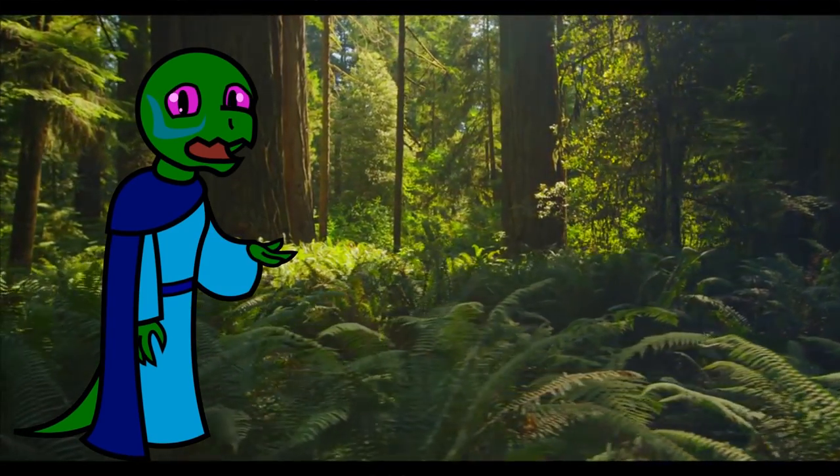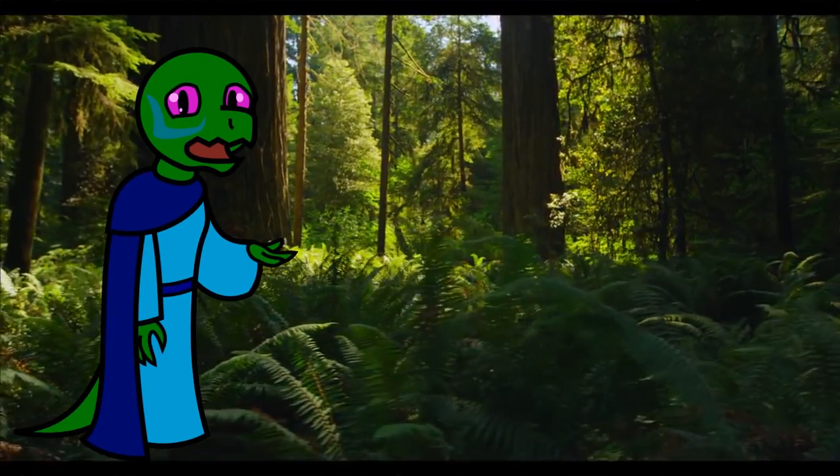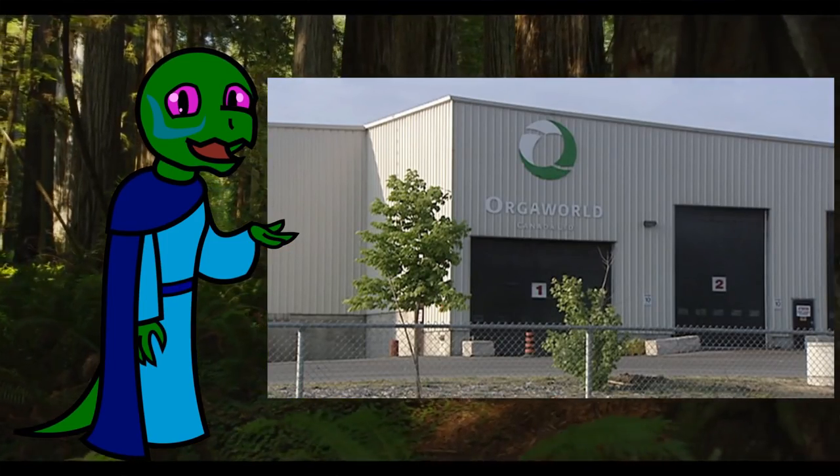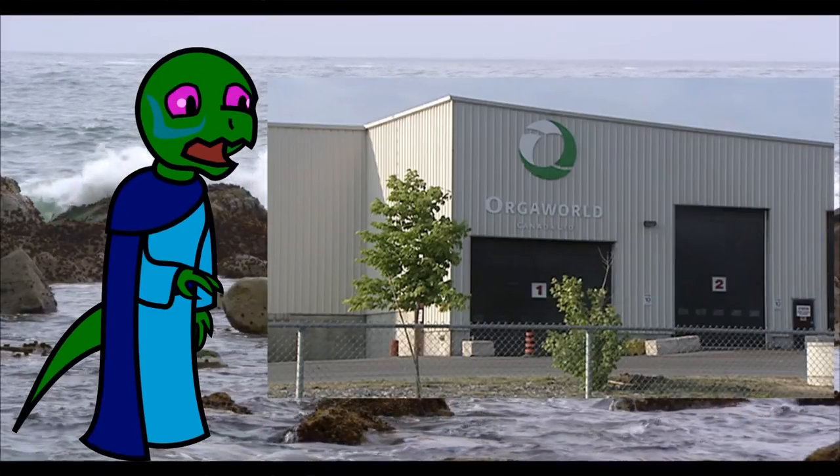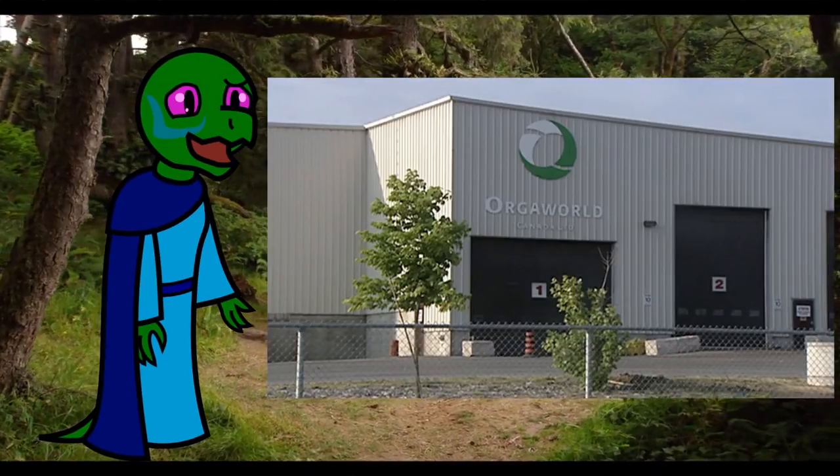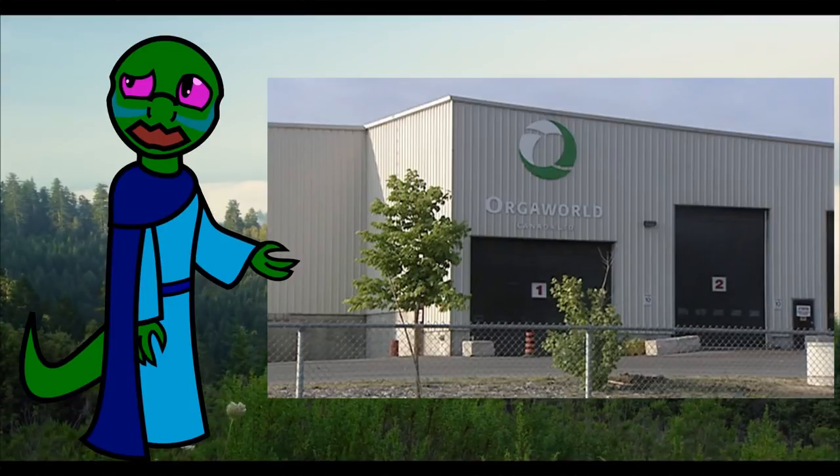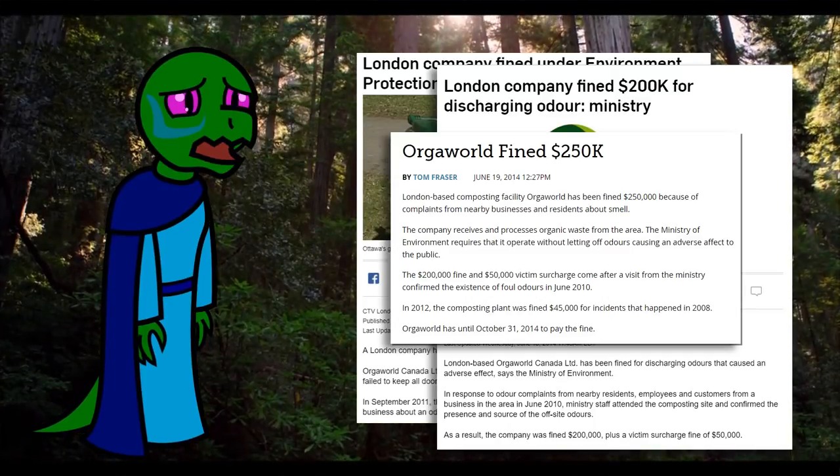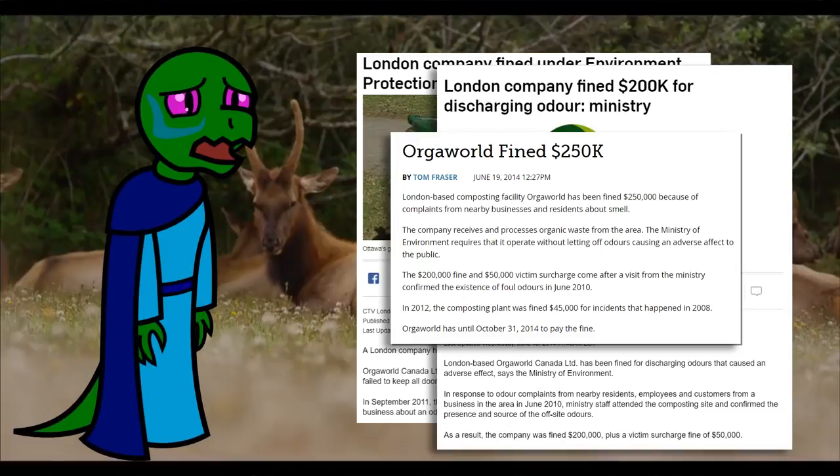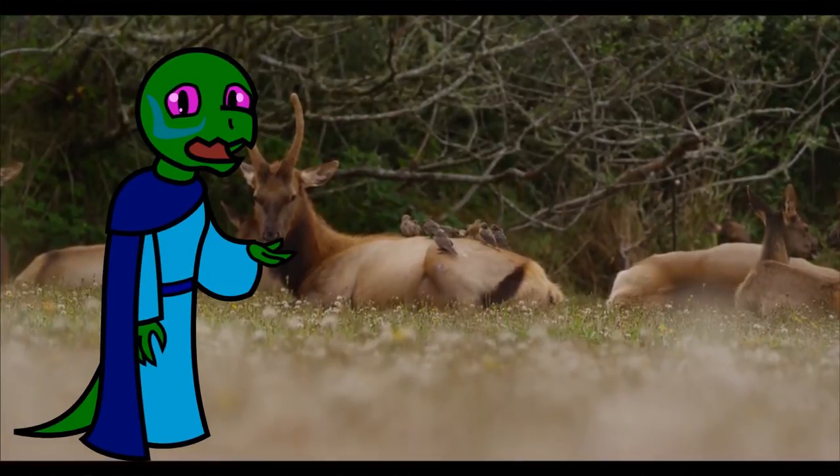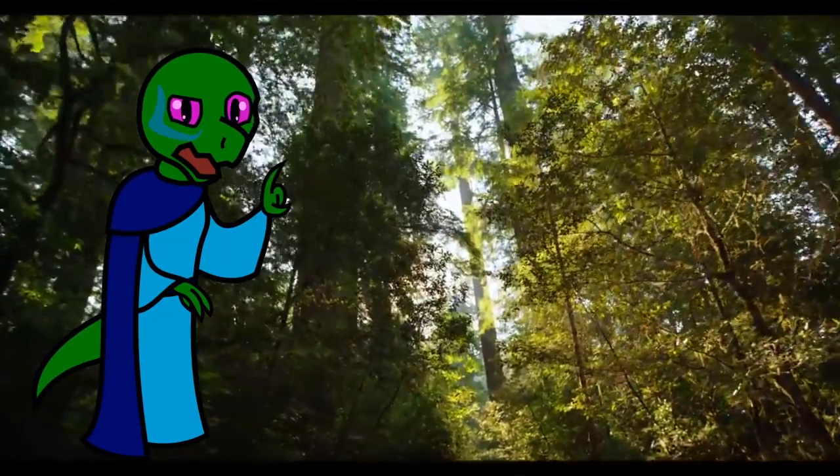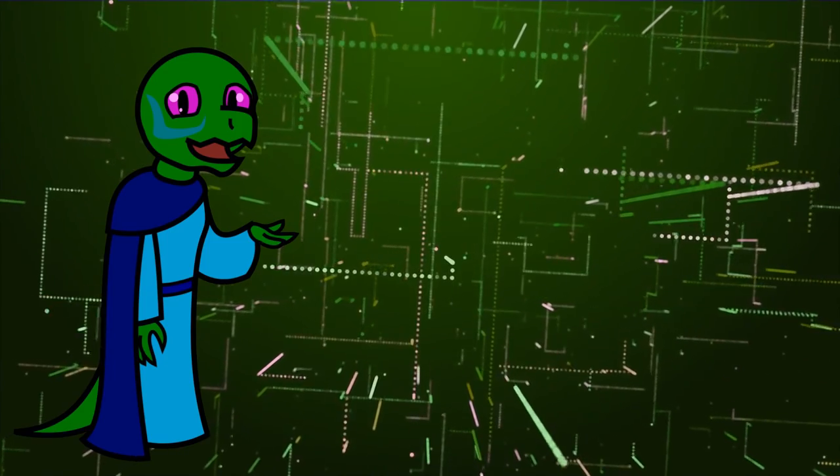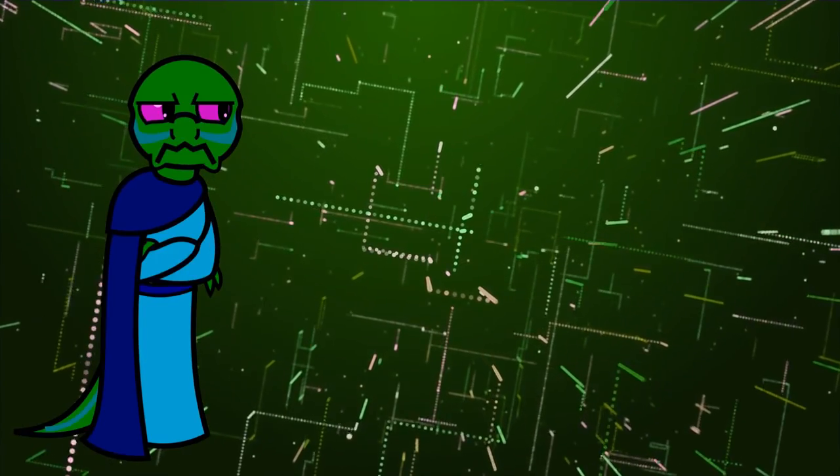Especially since more often than not, legislation is written by special interests on the business's behalf. The result is situations like in London, Ontario. The Orgaworld Waste Treatment Plant releases an atrocious odor, which has been an ongoing problem in the area since 2007. Not because the government hasn't tried to do something. In fact, they've fined Orgaworld repeatedly. They've been fined for hundreds of thousands of dollars, but this hasn't dissuaded Orgaworld from continuously breaking the law. The system of authoritarian law has failed to prevent the violation of the people of London, Ontario's private property rights.